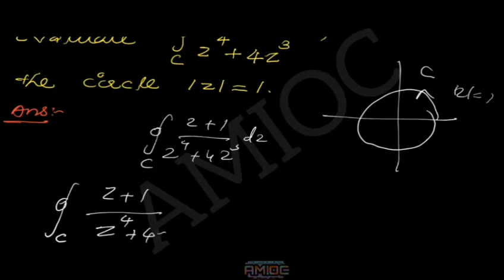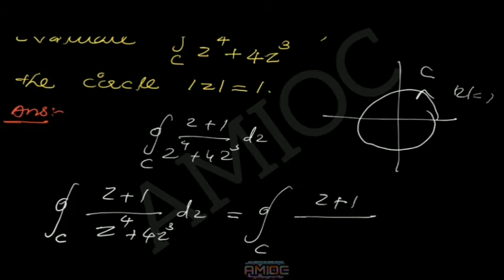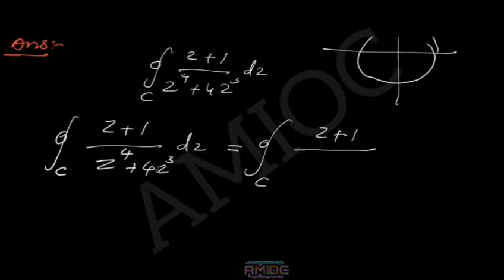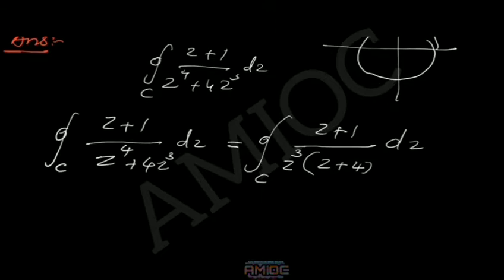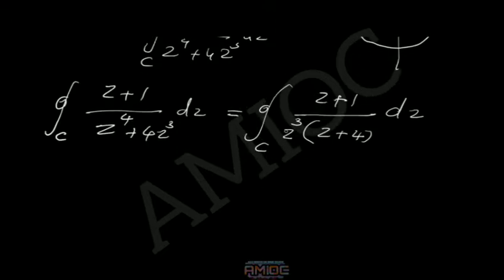The integral over C of (z+1)/(z⁴+4z³) dz can be rewritten by factoring the denominator. We factor z³ from z⁴+4z³, giving us z³(z+4). So the total function becomes (z+1) divided by z³(z+4) dz.